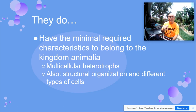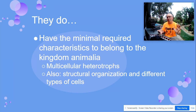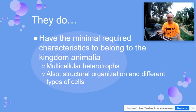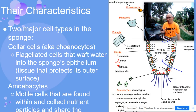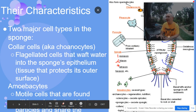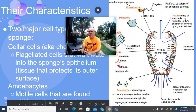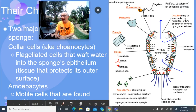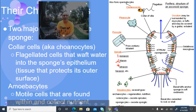Sponges have several different types of cells, but their cells are not arranged to form tissues, much less organs and organ systems. They basically have two main cell types.